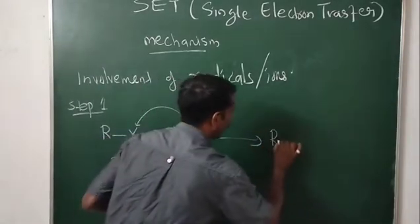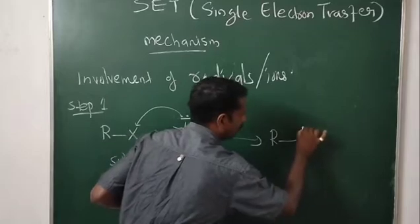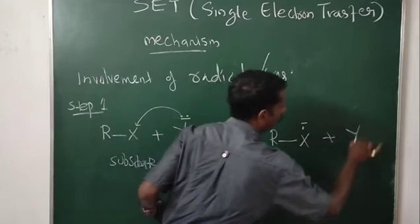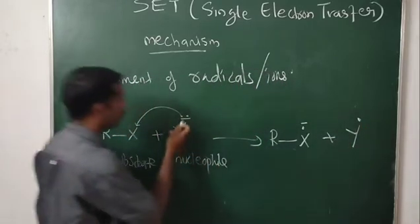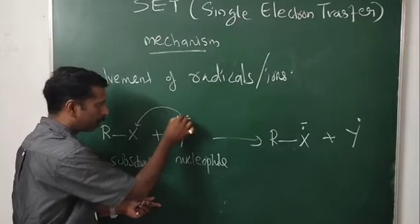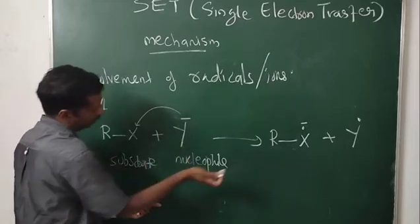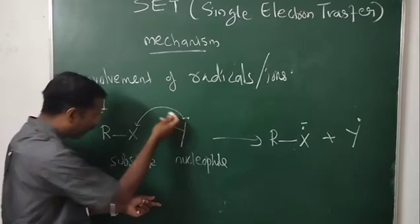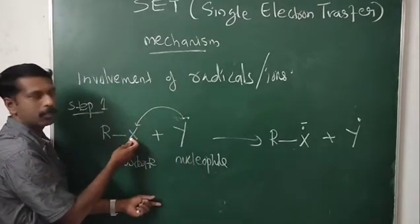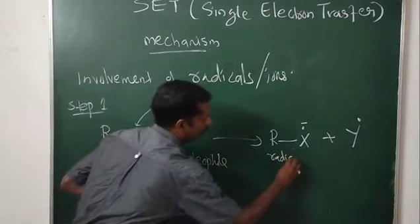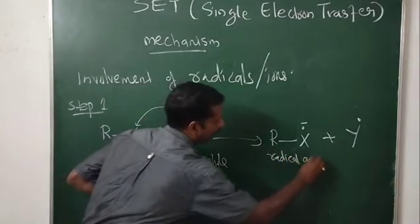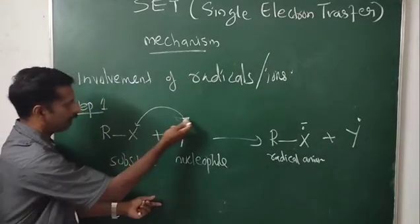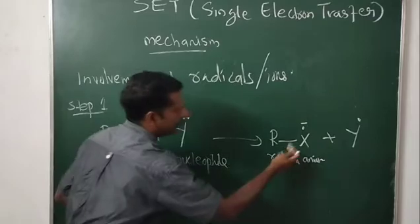What we get is RX with a single electron and a negative charge — that is the radical anion — plus Y free radical. Y minus carries a pair of electrons; one electron is transferred into the substrate molecule, and we get the radical anion and Y free radical.